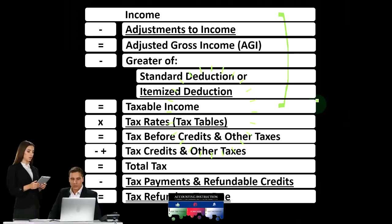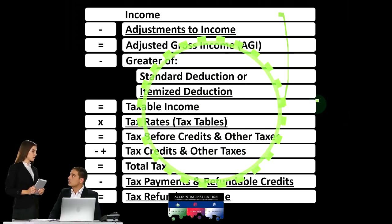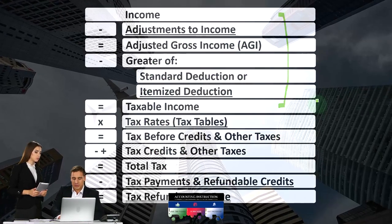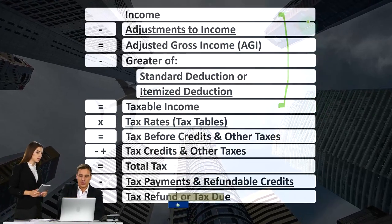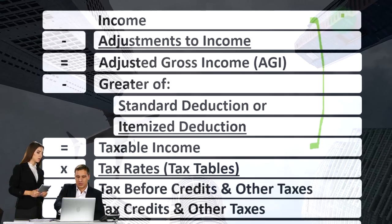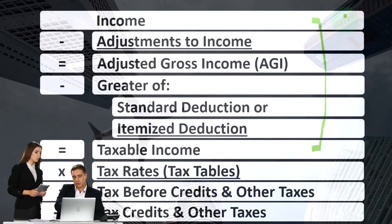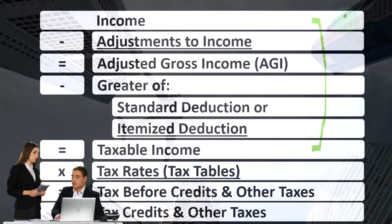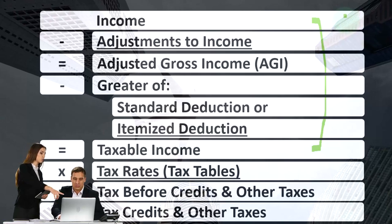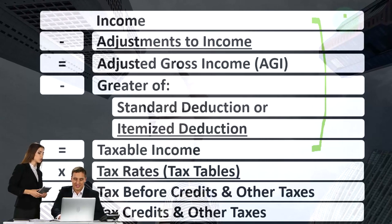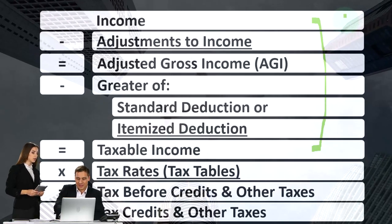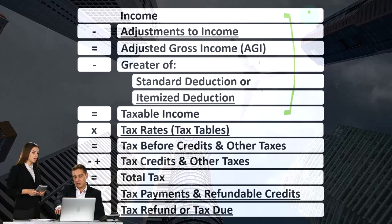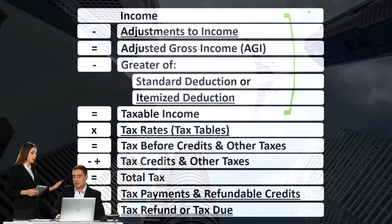As opposed to net income, which we're typically trying to get as high as possible, we're focused on the income line. So the question is: is the item we're thinking about — in this case, unemployment compensation — something that needs to be included in income, or is it exempt from income?